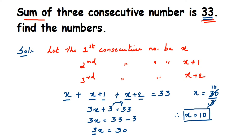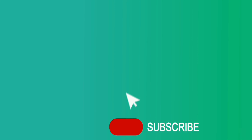The first number x equals 10. The second number is x plus 1, which is 10 plus 1 equals 11. The third number is x plus 2, which is 10 plus 2 equals 12. So the three consecutive numbers are 10, 11, and 12. You can verify: 10 plus 11 plus 12 equals 33. That's how you solve this problem — I hope this is clear. If you have any questions, drop a comment below. Thank you for watching!